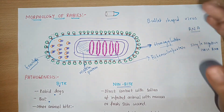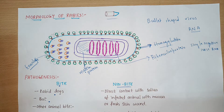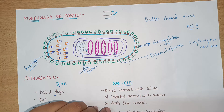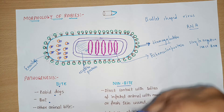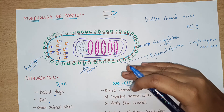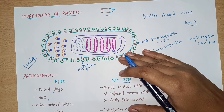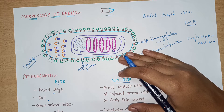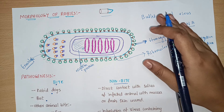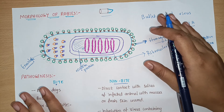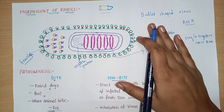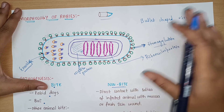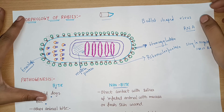This completes our video on the morphology and introduction part of the rabies virus. In our next video we will explain the pathogenesis and lab diagnosis, which is very important from the exam point of view. If you find this video useful, please subscribe to our channel. Thank you for watching.